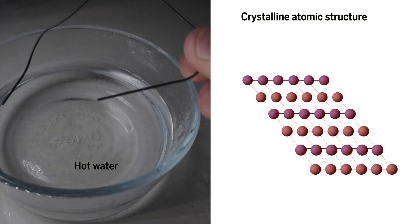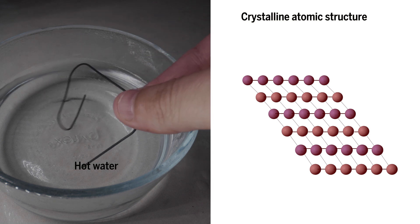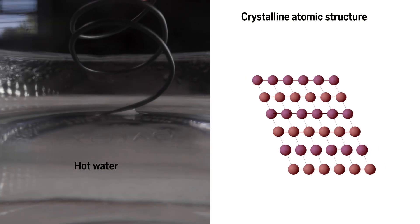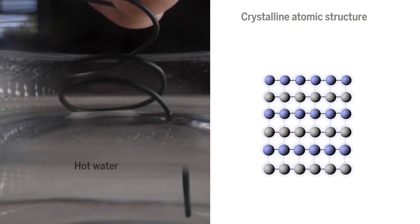But in turn, when you change the temperature of the surrounding of the alloy, it goes back to the original shape and the structure at the atomic level, and it has to absorb heat.